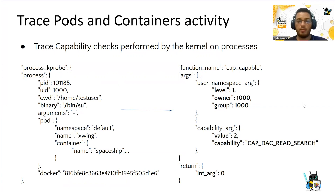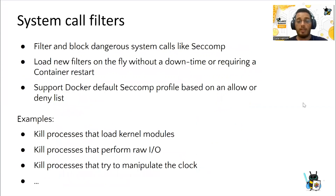This allows you to build better security profiles with the capabilities that your containers may require. Tetragram can also filter system calls and block dangerous system calls, supporting the default Docker seccomp profile as an allow or deny list. All this can happen on the fly without downtime or requiring a container restart.